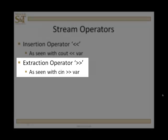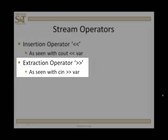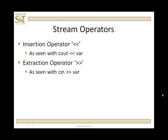Likewise, with the greater-than greater-than (>>), which is the extraction operator, you're using a cin statement. This is an operator — it's a function, a binary operator, just like plus or equals. It takes two operands. The operand on the left is a streaming object. cin is a streaming object, just like cout is a streaming object.